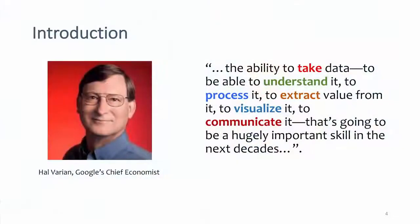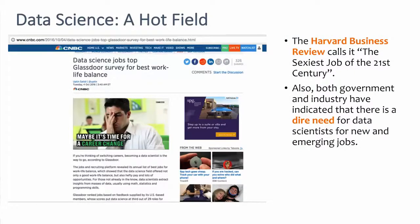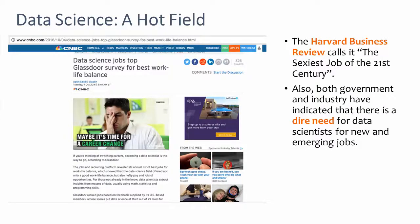This is a picture of Hal Varian, the chief economist of Google. What he said is: the ability to take data, to understand it, to process it, to extract value from it, to visualize it, to communicate it — that's going to be a hugely important skill in the next decades. Data science is a very hot field, noted by the Data Science Job Stop Glassdoor Survey for Best Work-Life Balance, and the Harvard Business Review calls it the sexiest job of the 21st century.